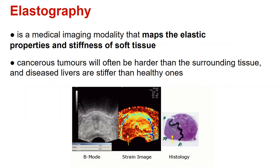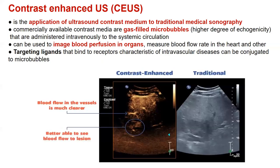The medical imaging modality that maps the elastic properties and stiffness of soft tissue is elastography. Cancerous tumors are often harder than the surrounding tissue, and diseased livers are stiffer than healthy ones, so elastography is mainly used in hepatology. Contrast-enhanced ultrasound (CEUS) is an application of ultrasound contrast medium to traditional medical sonography. The commercially available contrast media are gas-filled microbubbles, given intravenously to the systemic circulation, and they can be used to image blood perfusion in organs.